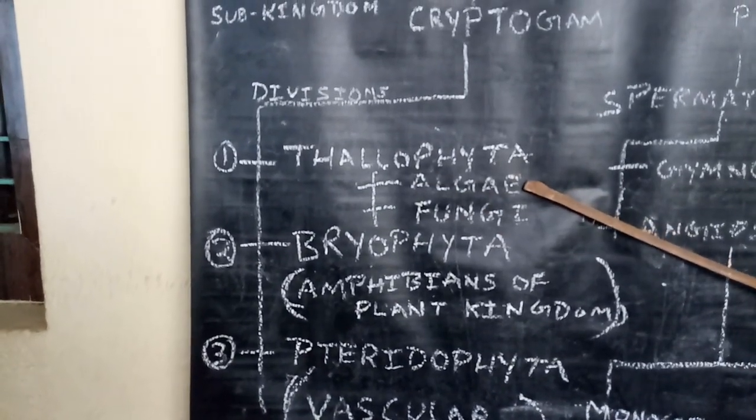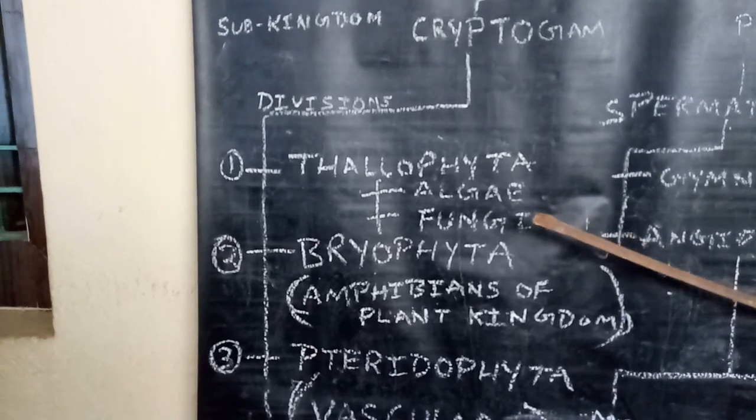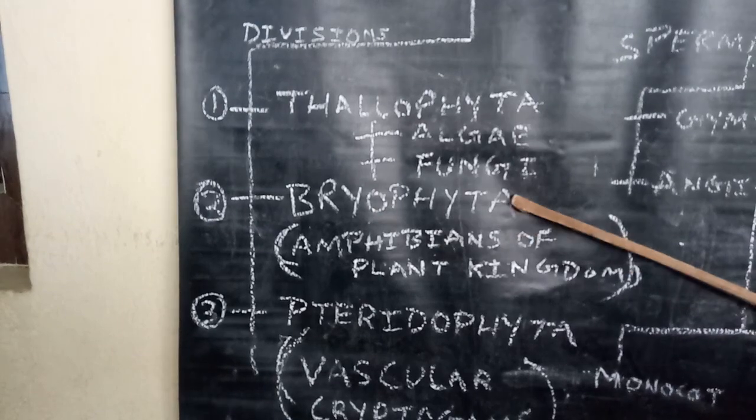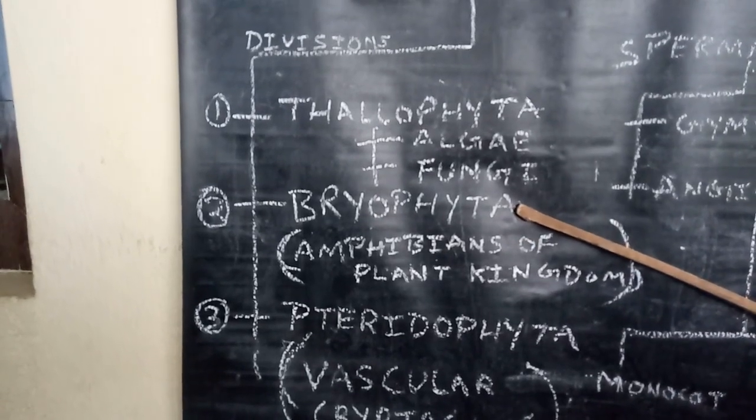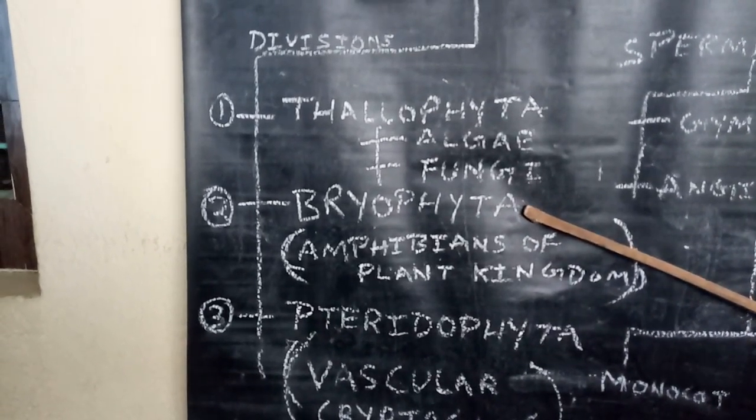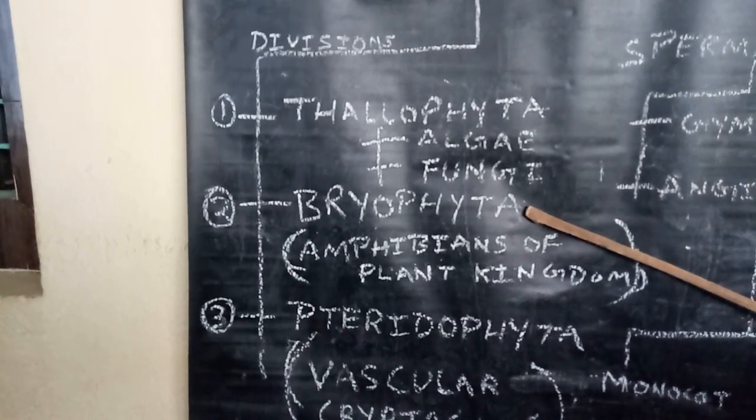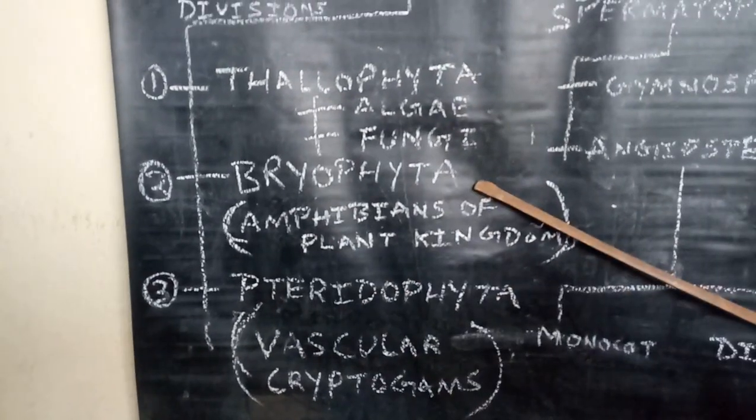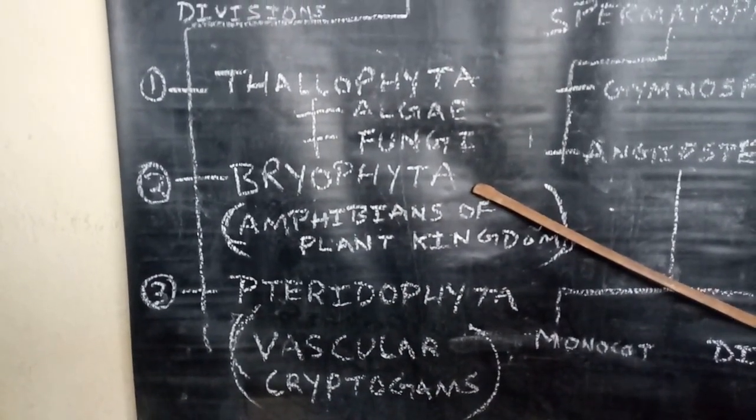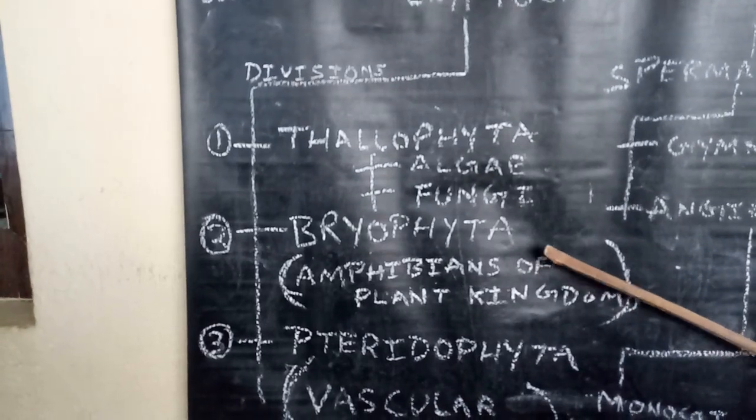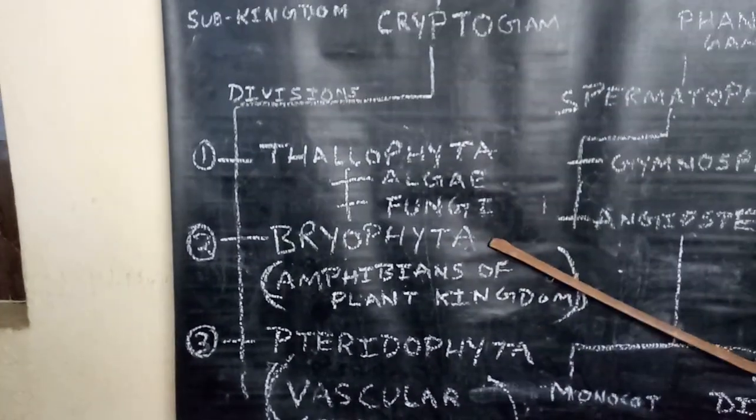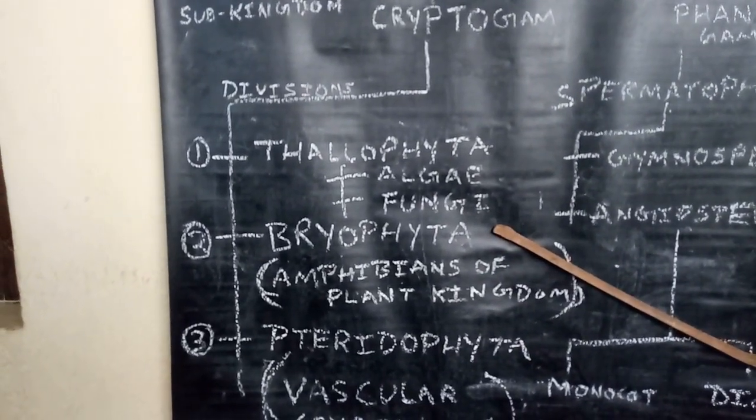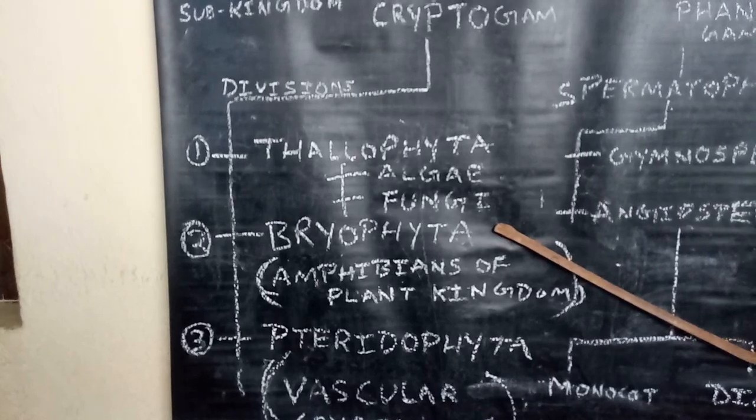Bryophyta includes chlorophyllous, autotrophic, embryophytic, and atracheophytic plants. Hence they are called amphibians of the plant kingdom. Chlorophyllous means with green color pigment chlorophyll. Autotrophic means it can prepare its own food. Embryophytic means the plant produces embryo. Atracheophytic means without vascular tissue, xylem and phloem.